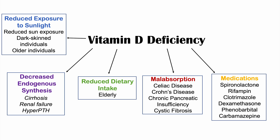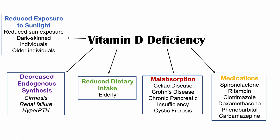Another category is medications. Medications like spironolactone, rifampin, clotrimazole, dexamethasone, phenobarbital, and carbamazepine can also lead to vitamin D deficiency. These medications decrease the activity of enzymes in the liver, such as the 25-hydroxylase enzyme.